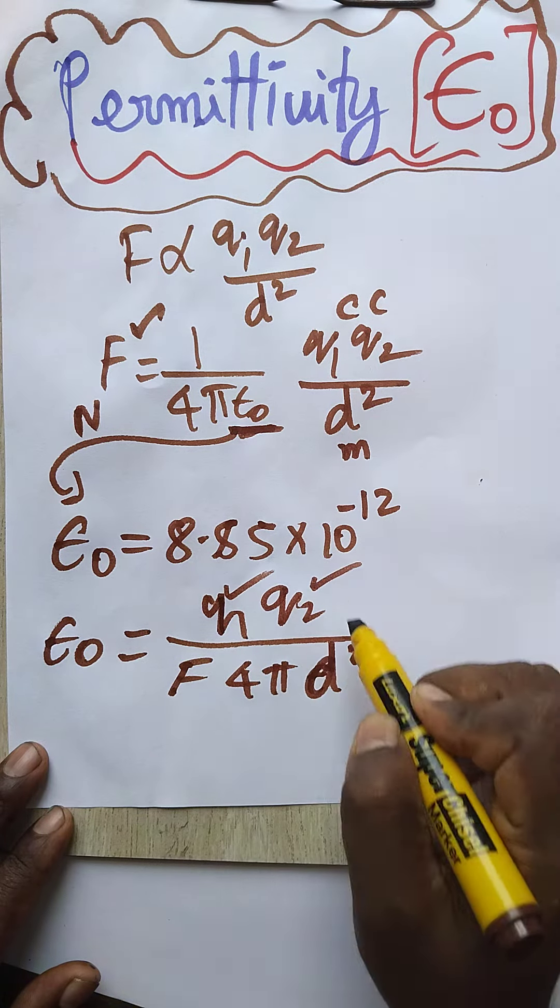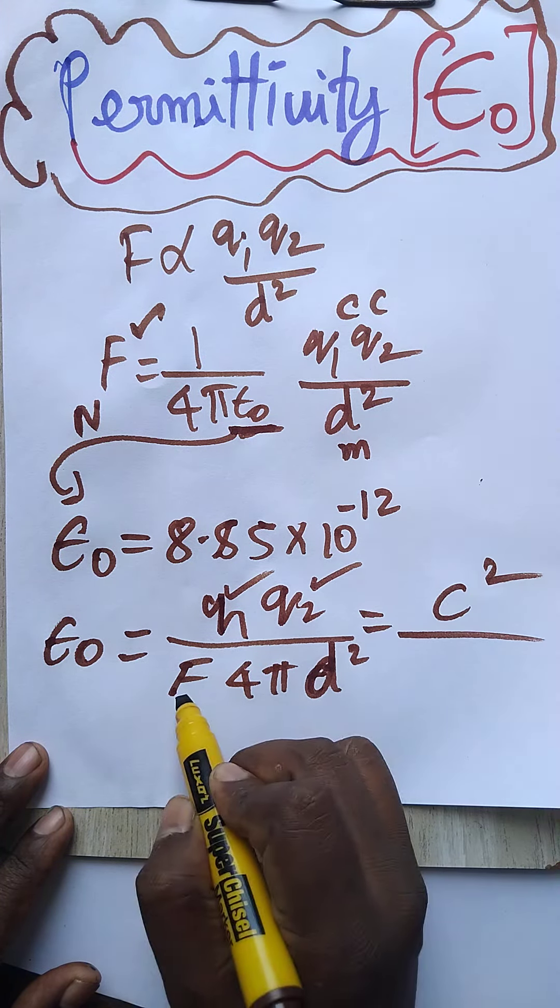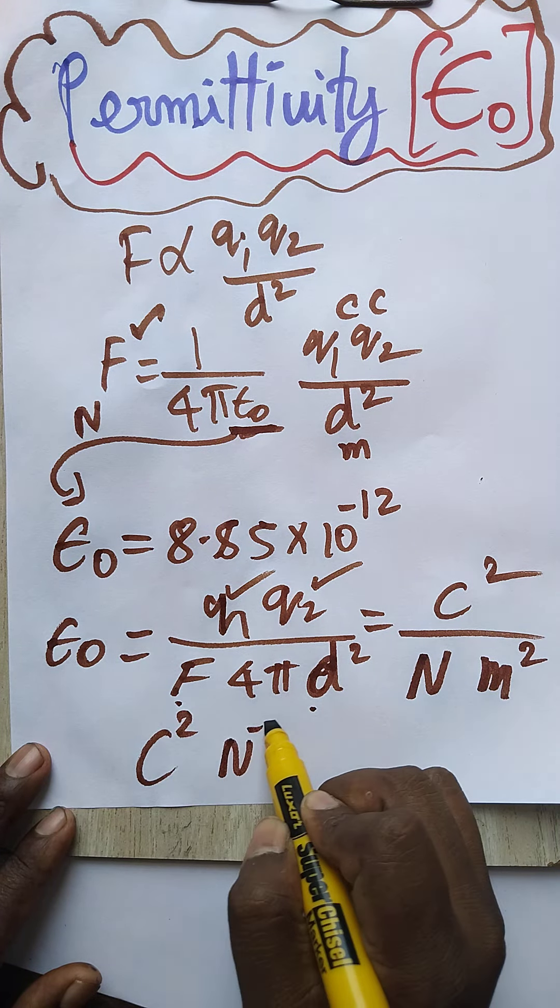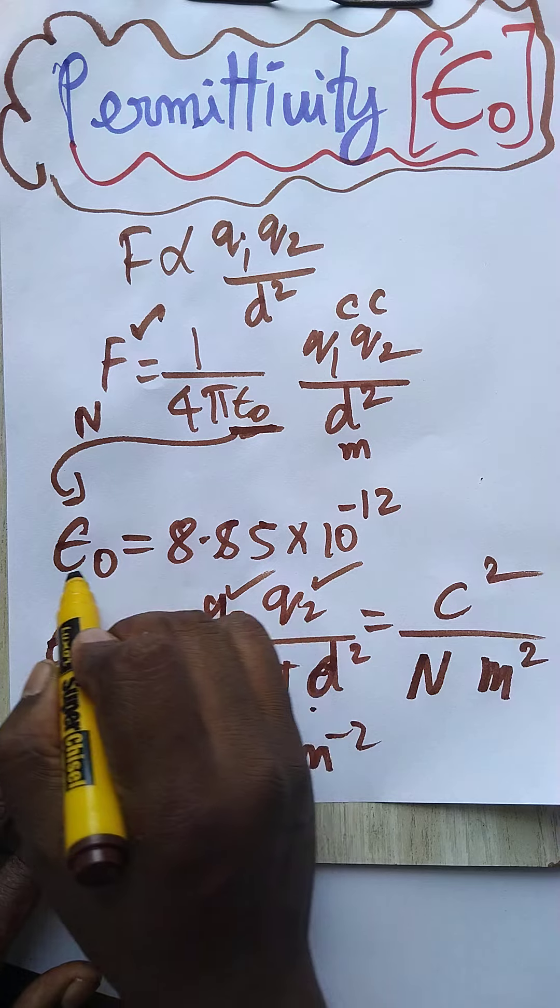This is charge, coulomb squared. This is force, Newton. This is distance, meter squared. So coulomb squared, newton inverse, meter⁻². This is the unit of permittivity.